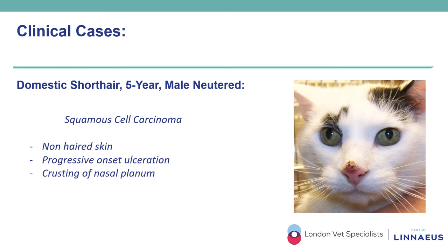A five-year-old male neutered domestic shorthair presented with a progressive history of ulcerations and crusting affecting the non-haired skin of the nasal planum. There was no previous history of skin disease and no evidence of pruritus. The list of differential diagnoses included at the top squamous cell carcinoma, which was further confirmed by histopathology. Squamous cell carcinoma is a common malignant neoplasm of dogs and cats, associated most often with chronic sun exposure, lack of pigment in the hair, and thin hair coats. It is usually preceded by actinic keratosis and is seen in geographical areas with long periods of intense sun exposure.